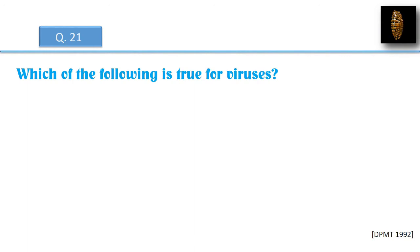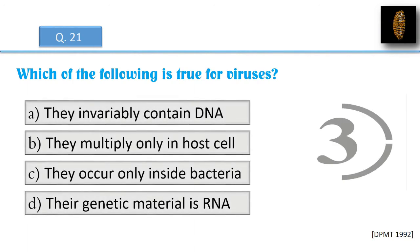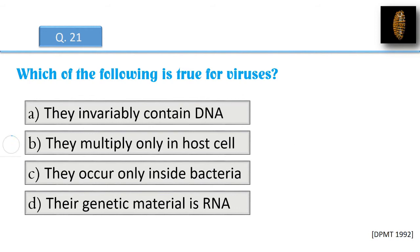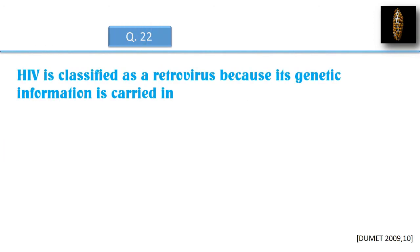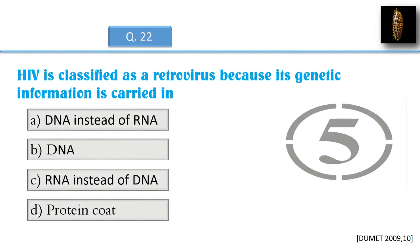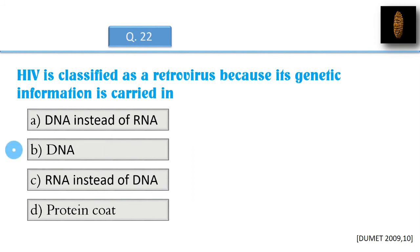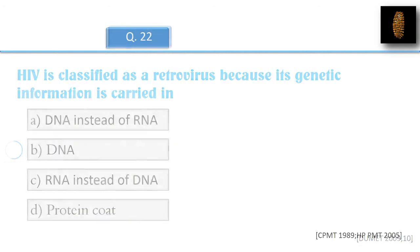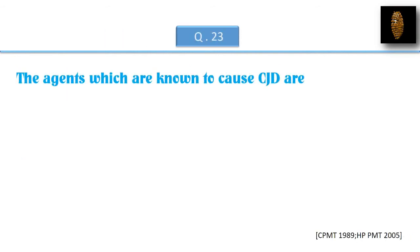Which of the following is true for viruses? HIV is classified as a retrovirus because its genetic information is carried in... The agents which are known to cause CJD are...